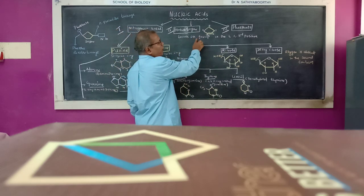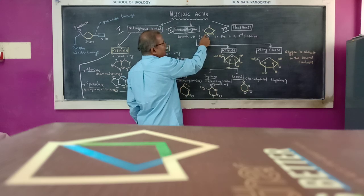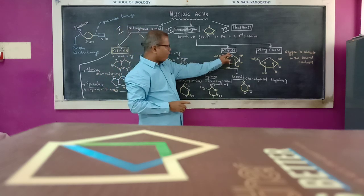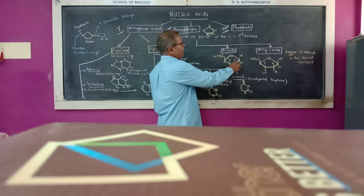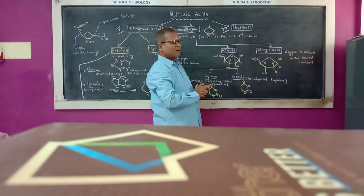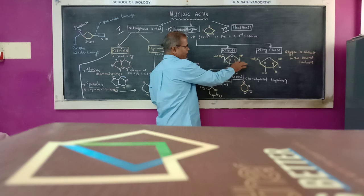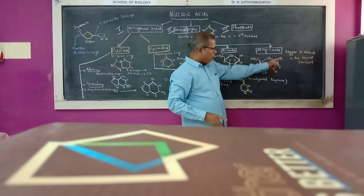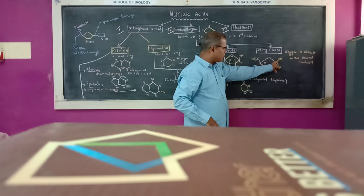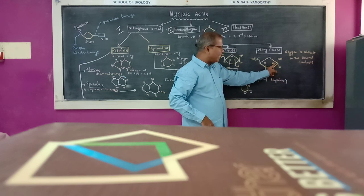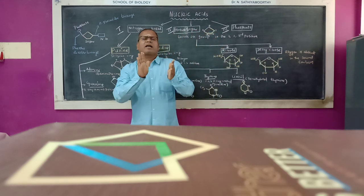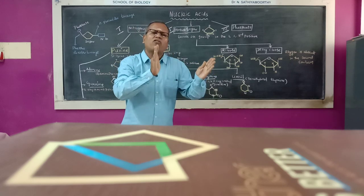The pentose sugar carries OH groups at the 1st, 2nd, and 3rd positions. There are two types of pentose sugars: ribose and deoxyribose. If oxygen is absent at the 2nd carbon position (H instead of OH), it is known as deoxyribose sugar.